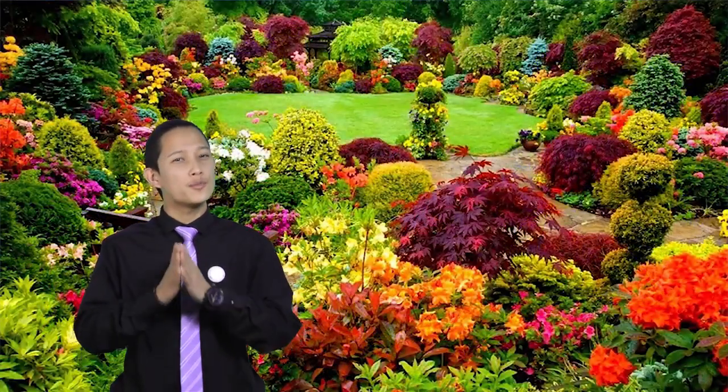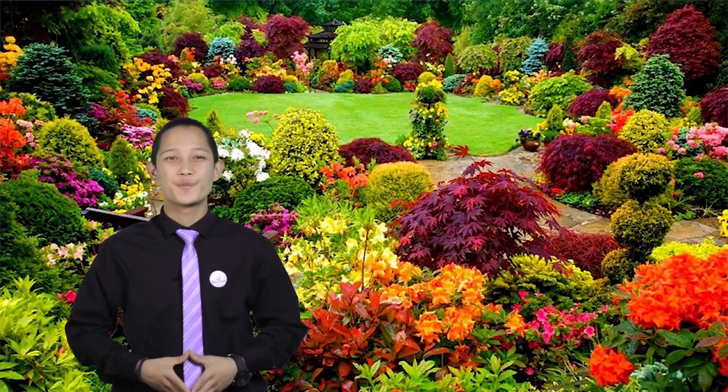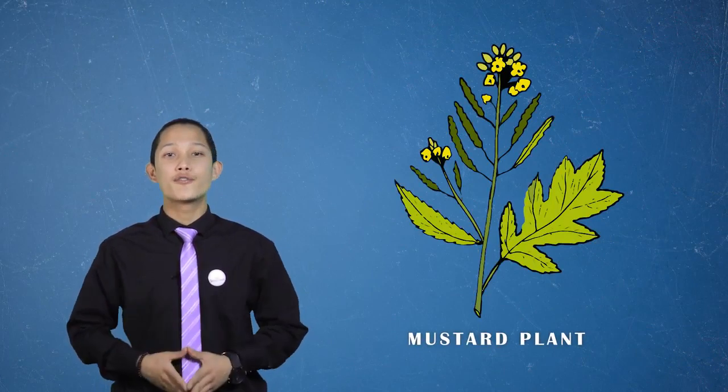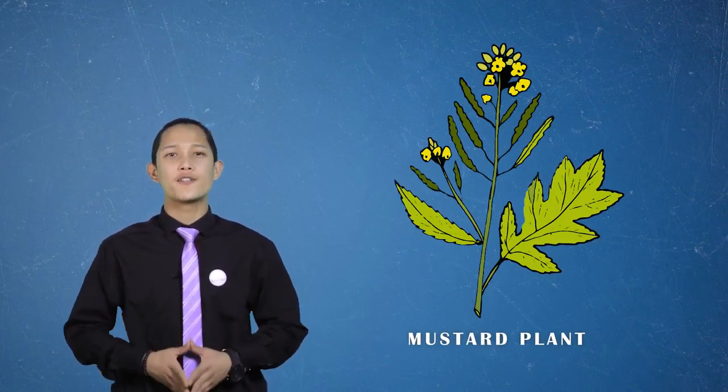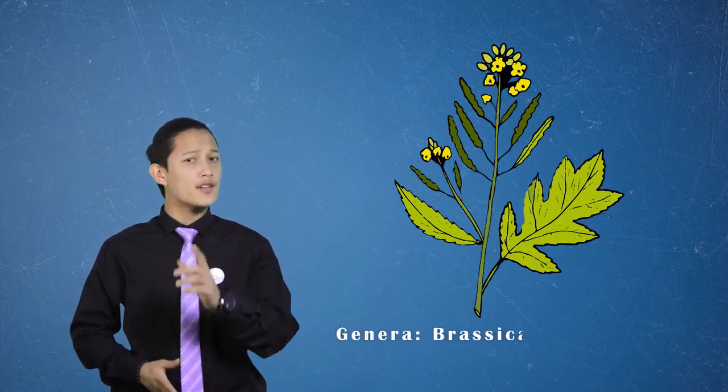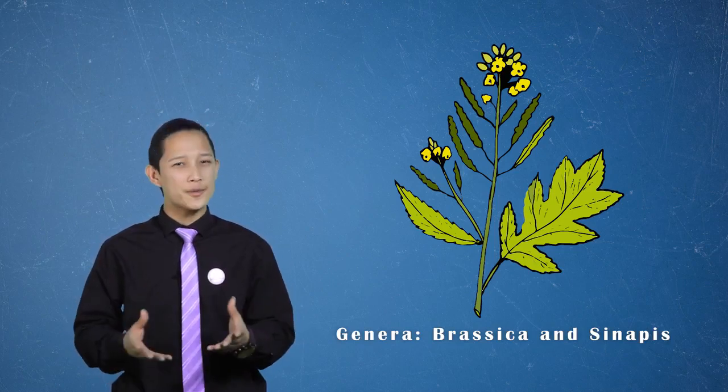Some flowering plants have medicinal value, some are ornamental and give beauty to the place where they grow. So guys, we'll discuss about mustard plant for understanding of life cycle of flowering plants. Mustard plants are any of several plant species in the genera Brassica and Sinapis.